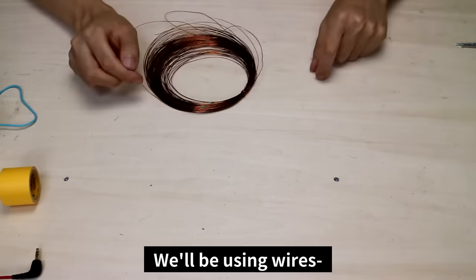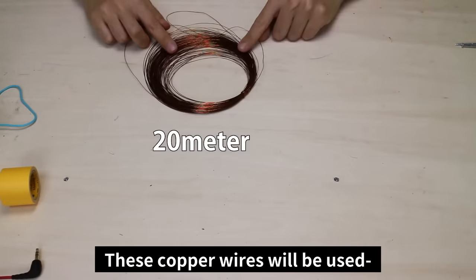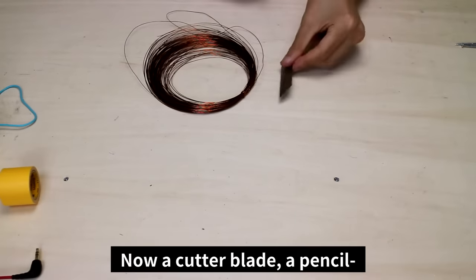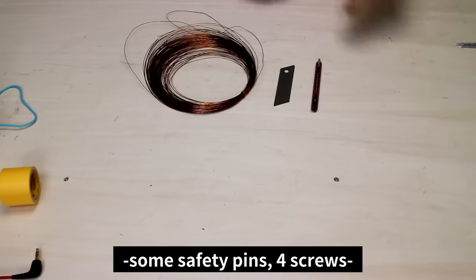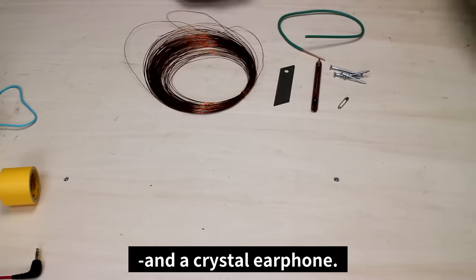We'll be using wires that are 0.5 millimeters in width. These copper wires will be used to craft the antenna and coils of the radio. Now, a cutter blade, a pencil, some safety pins, four screws, a copper cable, and a crystal earphone.